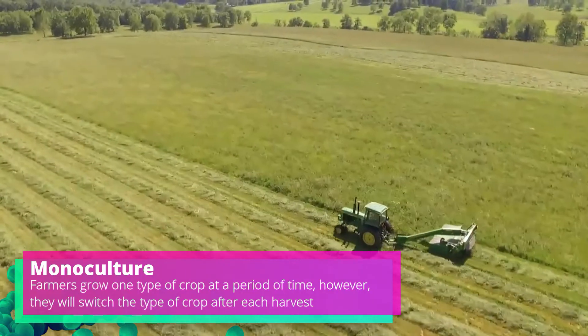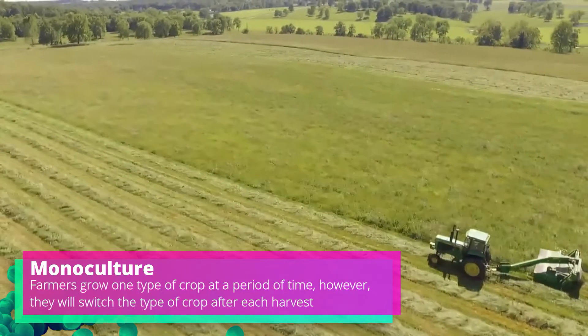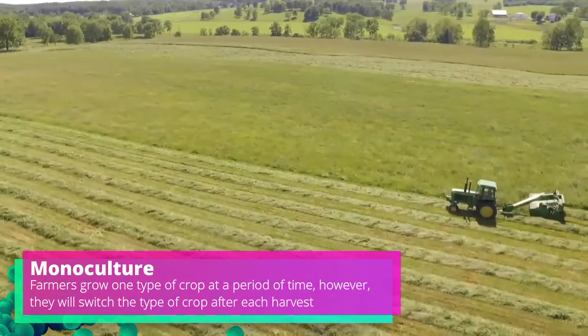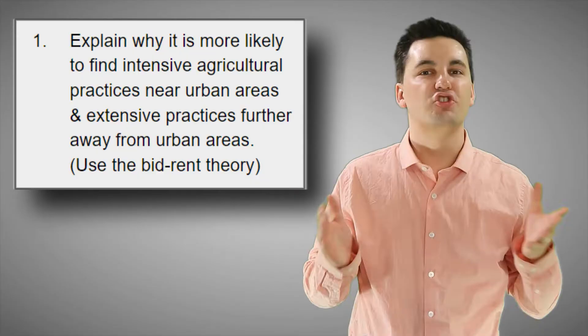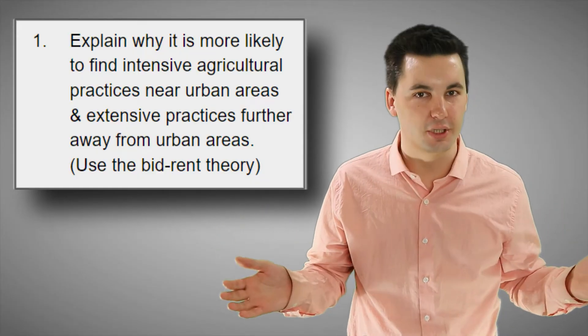Once that crop is ready for harvest, they may switch the type of crop they plant. This allows for nutrients in the soil to be replenished and prevents soil depletion from occurring. And just like that geographers, another topic review video is complete.